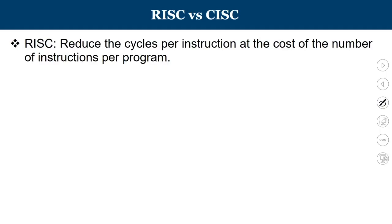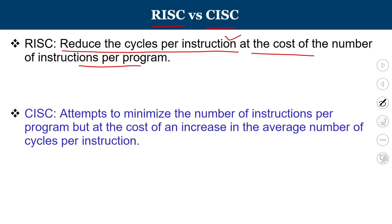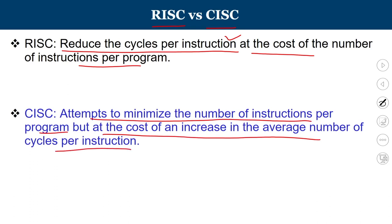The two broader classifications are RISC architecture and CISC architecture. RISC stands for Reduced Instruction Set Computer and CISC stands for Complex Instruction Set Computer. The basic idea in RISC is to reduce the cycles per instruction at the cost of number of instructions. A given task on a RISC computer will have multiple simple instructions, each taking only a few cycles. Whereas CISC attempts to minimize the number of instructions per program, at the cost of increasing the average number of cycles per instruction, so each instruction takes a larger number of clock cycles.